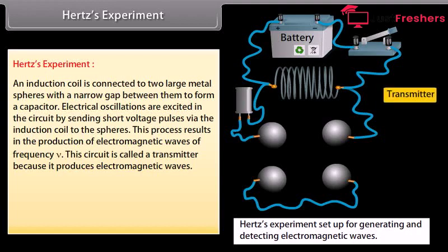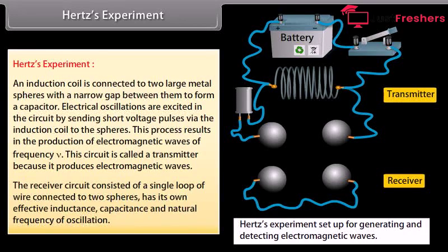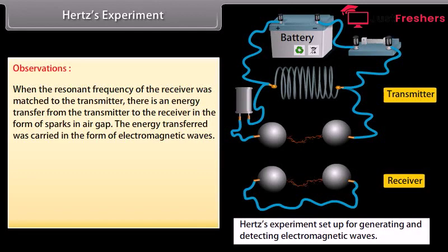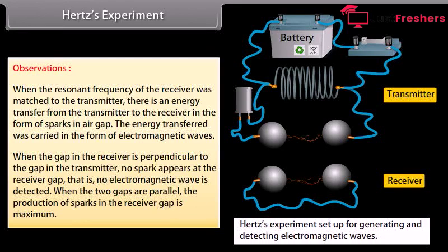This circuit is called a transmitter because it produces electromagnetic waves. The receiver circuit consisted of a single loop of wire connected to two spheres, with its own effective inductance, capacitance, and natural frequency of oscillation. When the resonant frequency of the receiver was matched to the transmitter, there is an energy transfer in the form of sparks in the air gap — energy carried as electromagnetic waves. When the gap in the receiver is perpendicular to the gap in the transmitter, no spark appears, meaning no electromagnetic wave is detected. When the two gaps are parallel, the production of sparks in the receiver gap is maximum.